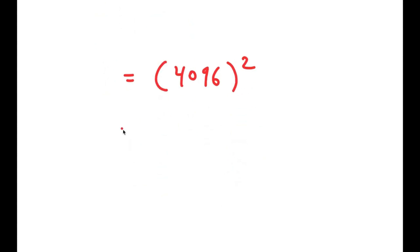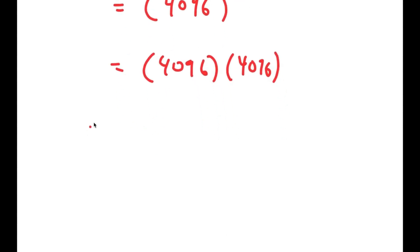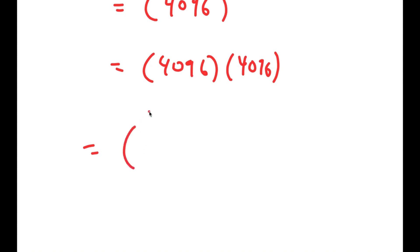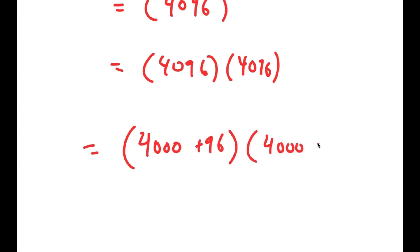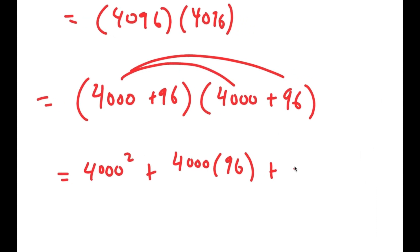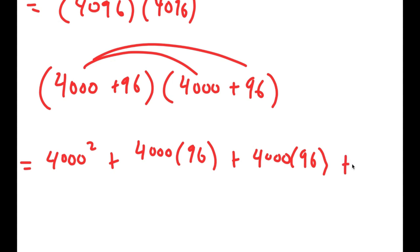So now I have 4096 squared, which is 4096 times 4096. The conventional multiplication method takes too long and is error-prone, so instead I'll write this as (4000 + 96) times (4000 + 96) and use the distributive property. Expanding gives 4000 squared plus 4000 times 96 plus 4000 times 96 plus 96 squared.